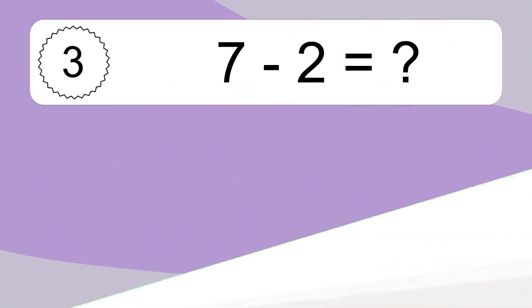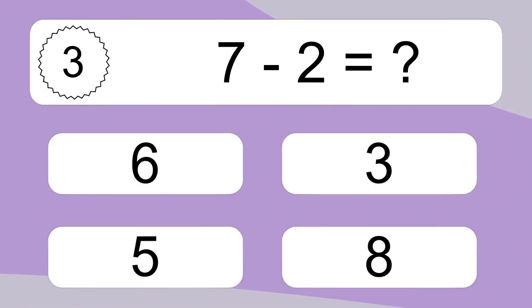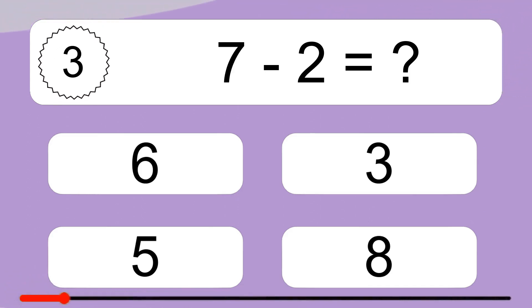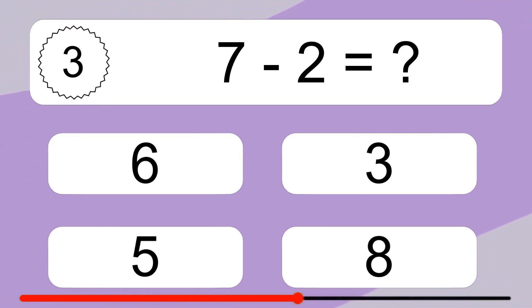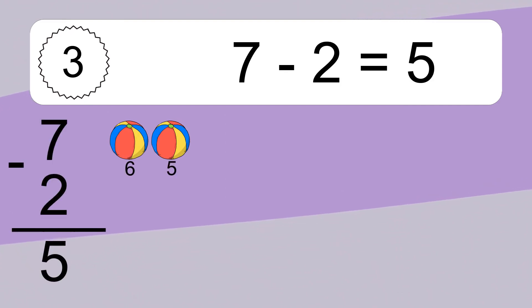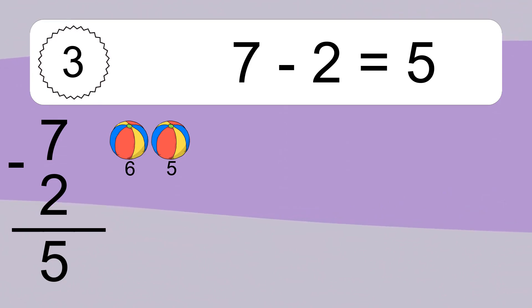7 minus 2 equals what? 7 minus 2 equals 5. Let's count it: 6, 5.